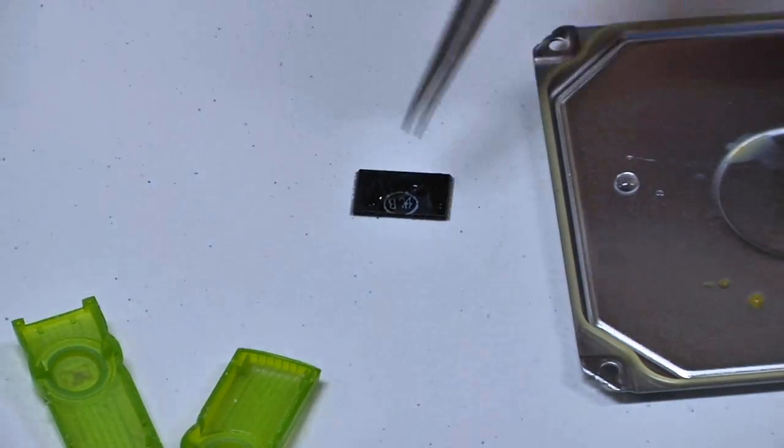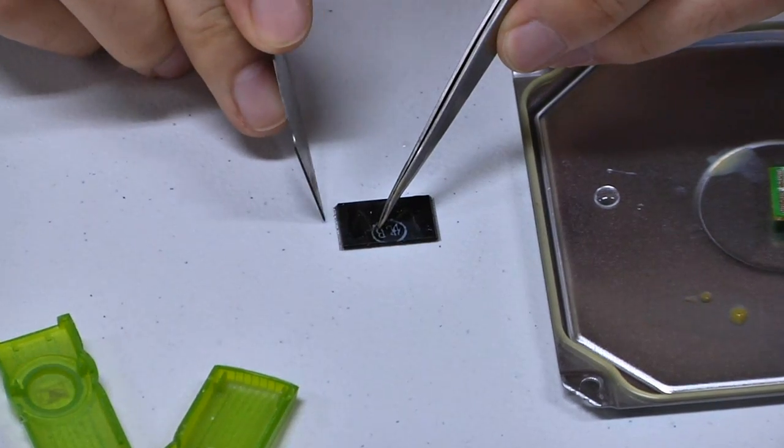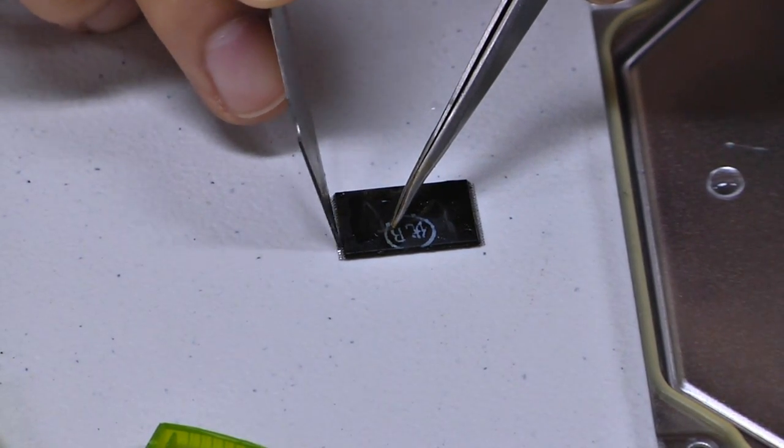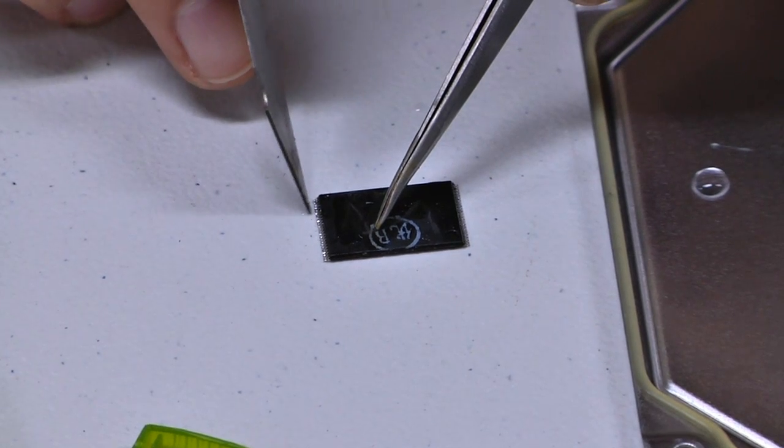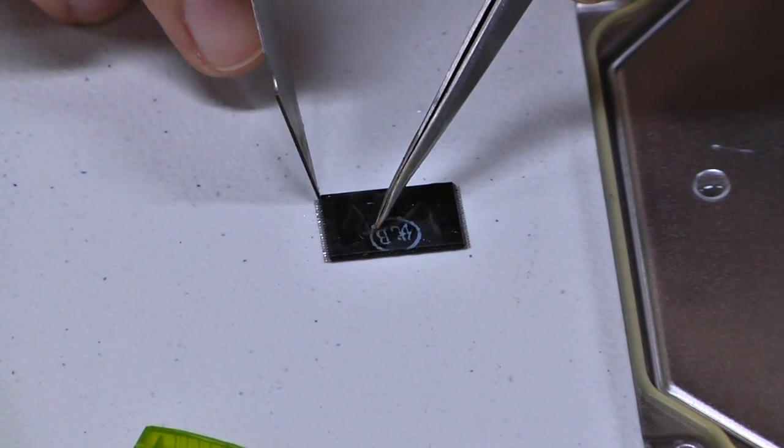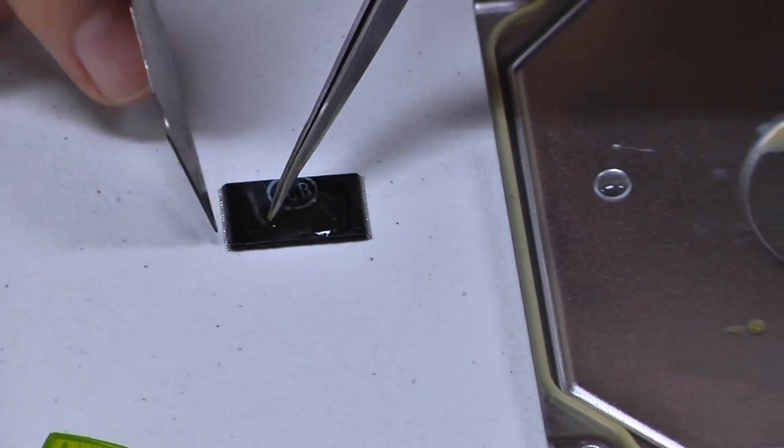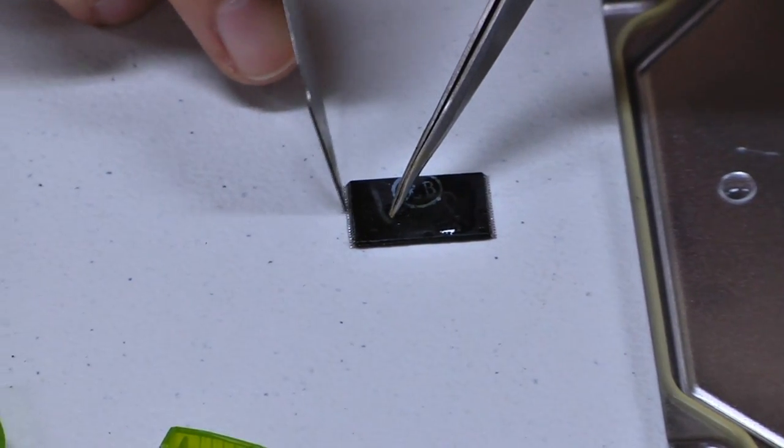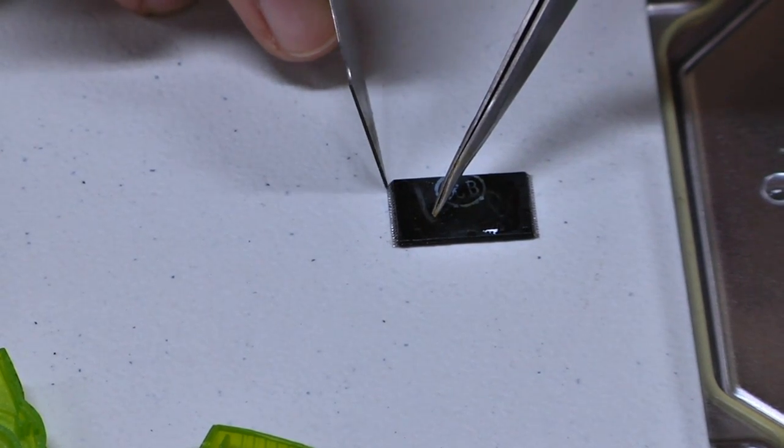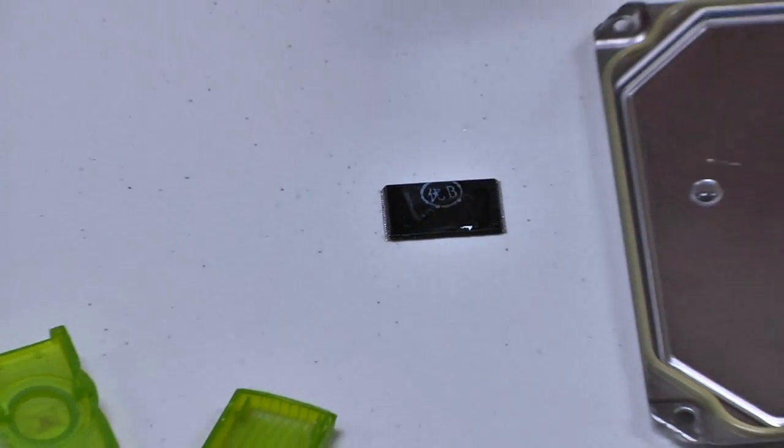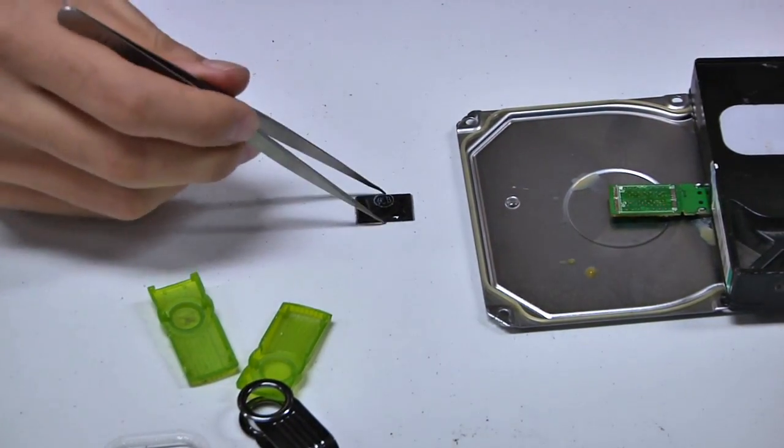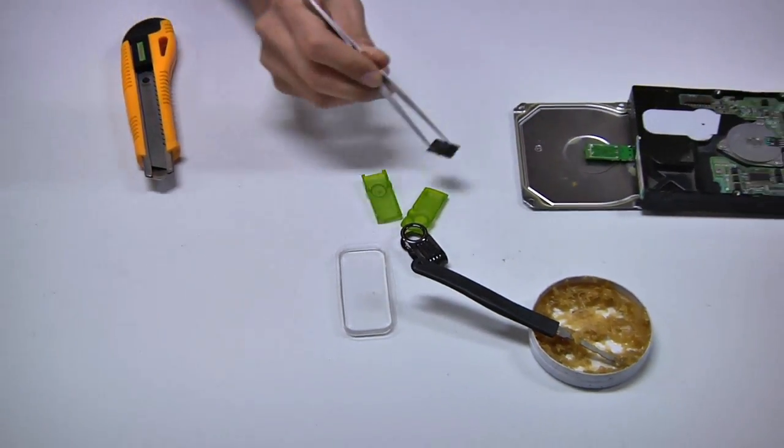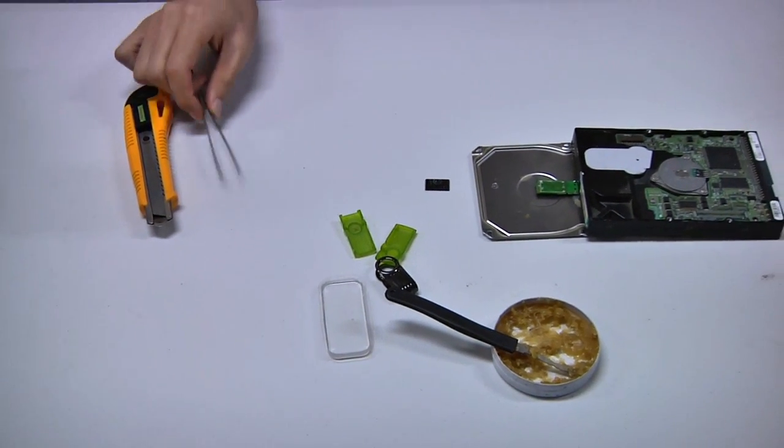So after you get it out from your alcohol, if you find out it's not clean enough, you can use your blade to help it make it cleaner. Scratch the pins to make every pin clean.